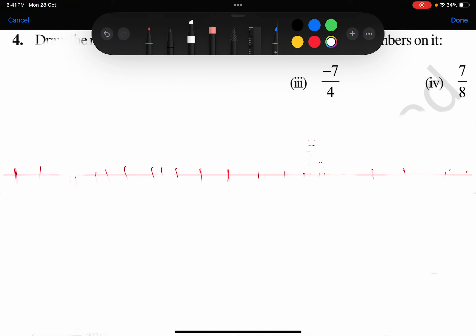The third one is minus 7 by 4. The denominator is again 4, so it will be 0, minus 1/4, minus 2/4, minus 3/4, and it will be minus 1. Minus 1 represents minus 4/4, then minus 5/4, minus 6/4, minus 7/4.